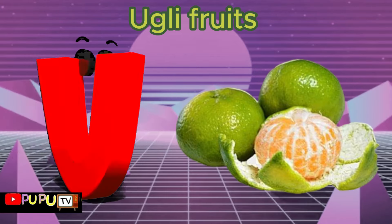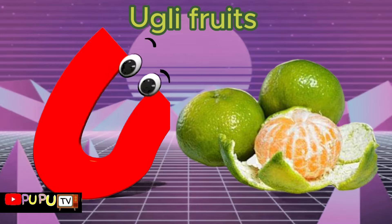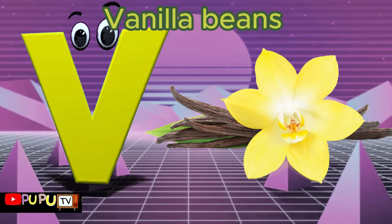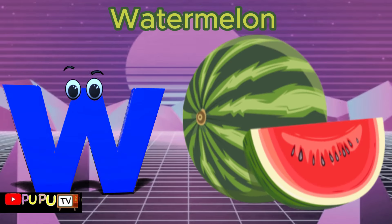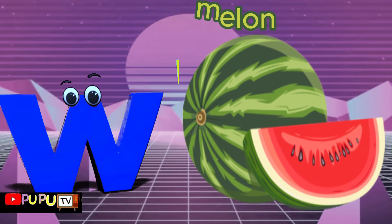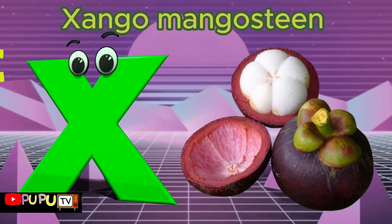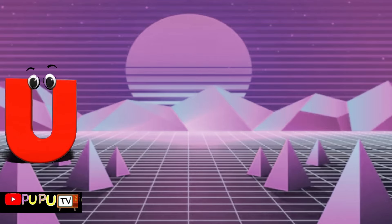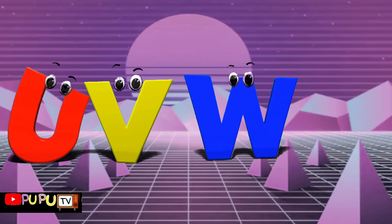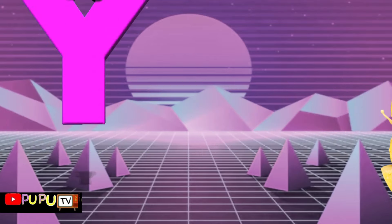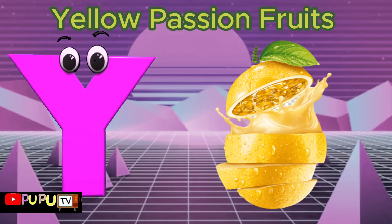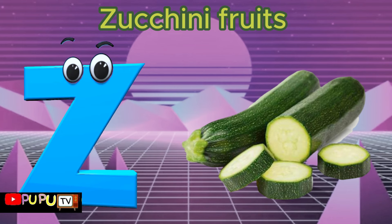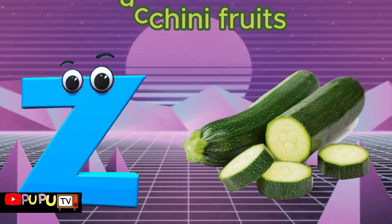U is for Ugly Fruit. U-U-Ugly Fruit. V is for Vanilla Beans. V-Vanilla Beans. W is for Watermelon. W-W-W-W-Watermelon. X is for Xanthomangostin. X-X-Xanthomangostin. Y is for Yellow Passion Fruit. Yellow Passion Fruit. Z is for Zucchini Fruit. Z-Z-Zucchini Fruit.